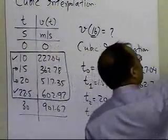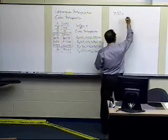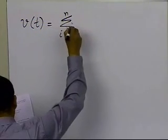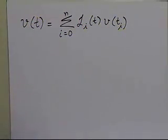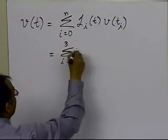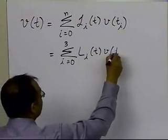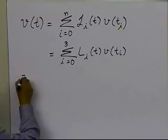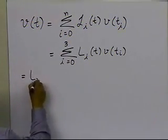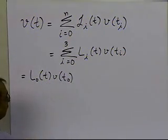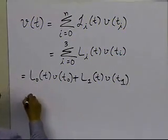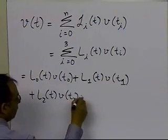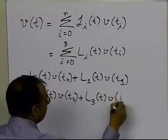Going back to the original formula for Lagrangian interpolation: it is the summation from i=0 to n of L_i(t) times v(t_i). Since we are doing cubic interpolation, i goes from 0 to 3, giving us four terms: L0(t)·v(t0) + L1(t)·v(t1) + L2(t)·v(t2) + L3(t)·v(t3).